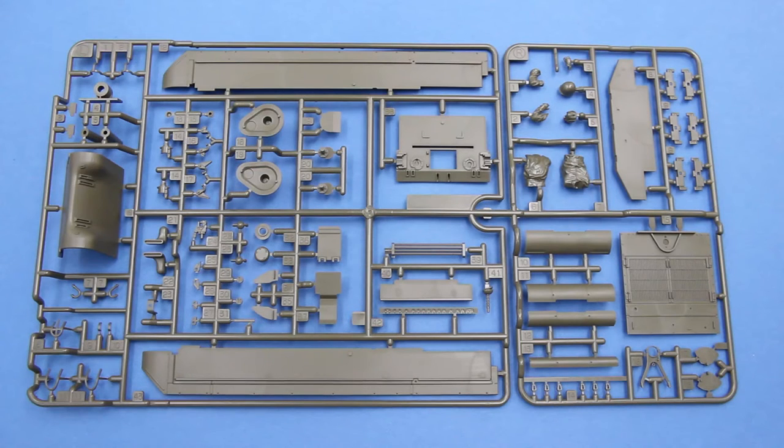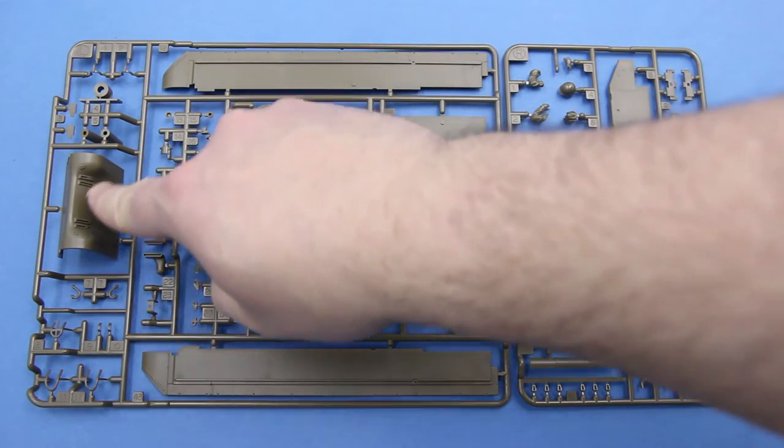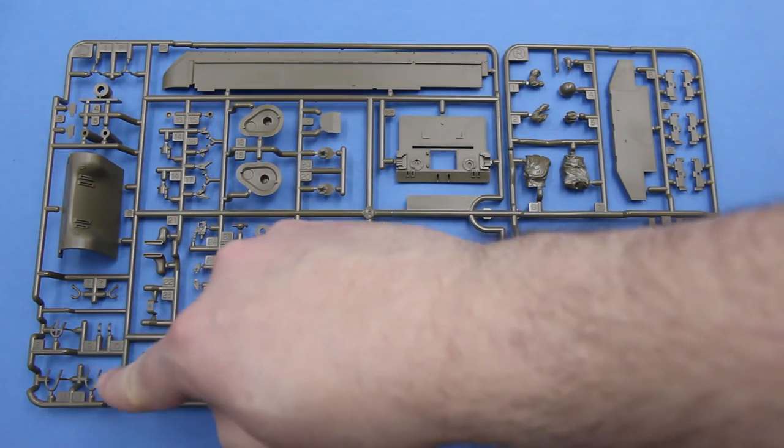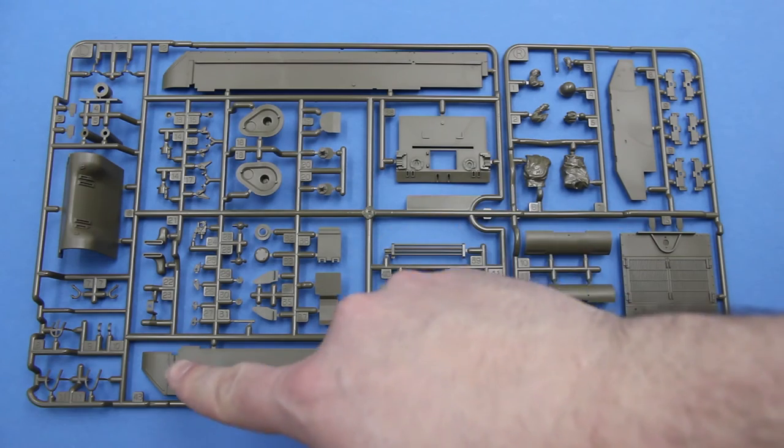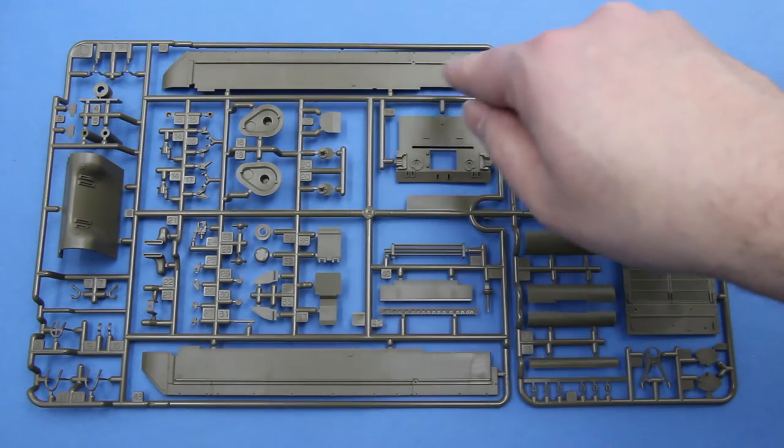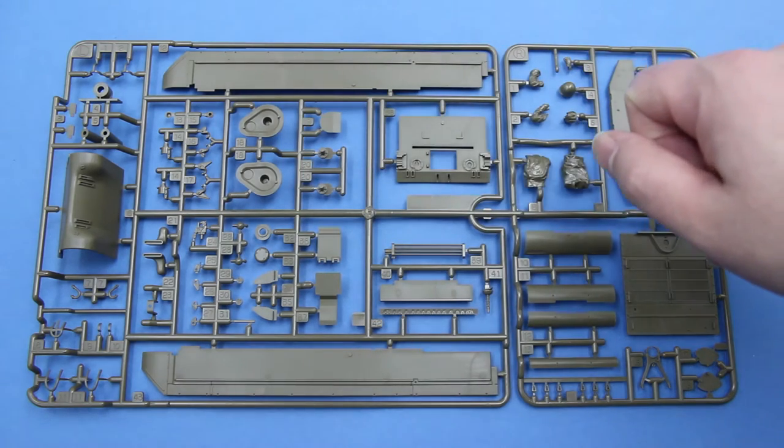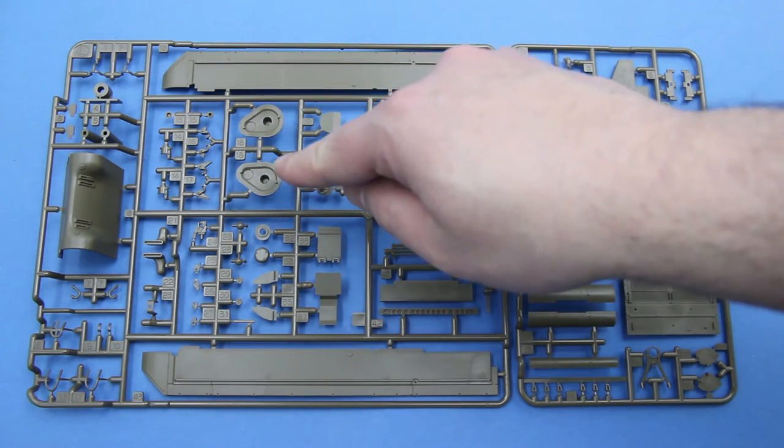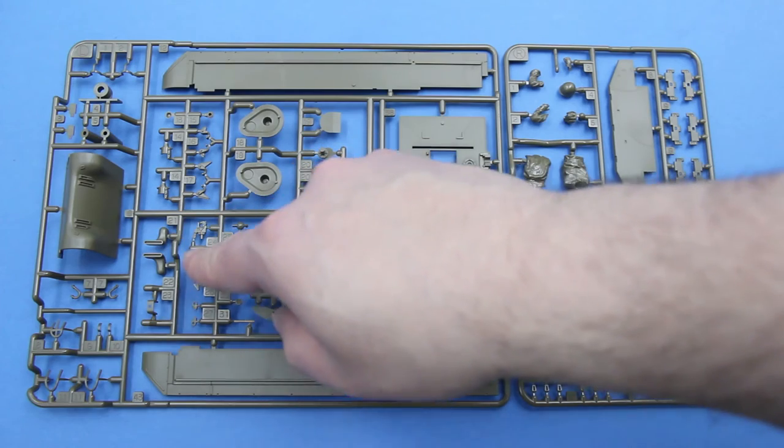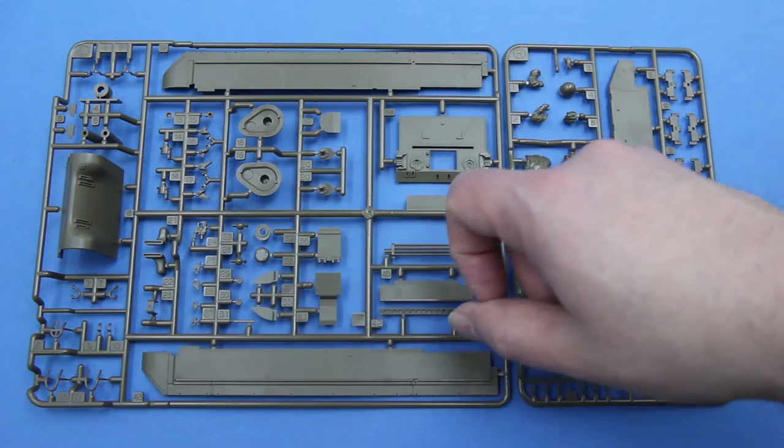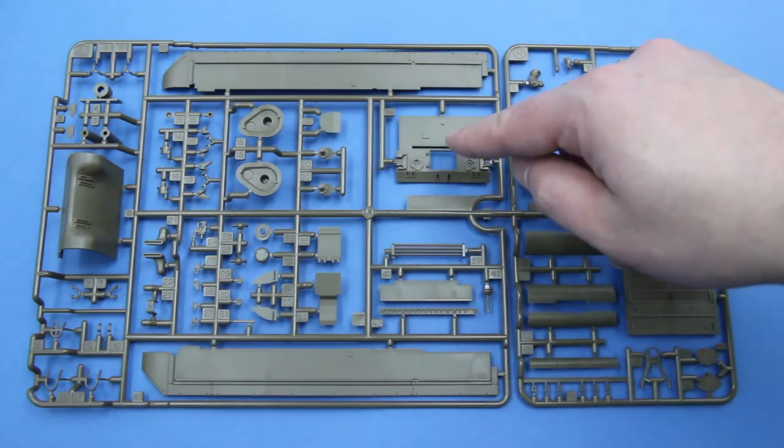This sprue contains parts that are generally for the hull. This is the transmission cover. Some brush guards. Some parts. The fenders here with the sponson floors included for once. Final drive covers. Exhausts. Towing pintle. The rear of the hull.